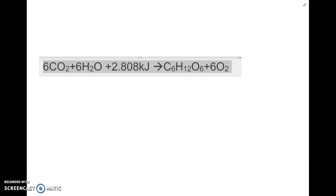All right, here we have the chemical equation for photosynthesis. It may look familiar to you. We have carbon dioxide reacting with water to produce glucose and oxygen. And we can see in here we have 2.808 kJ. That kJ stands for kilojoules.